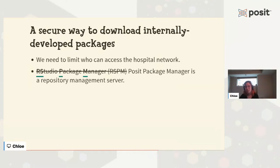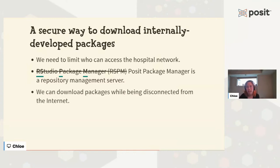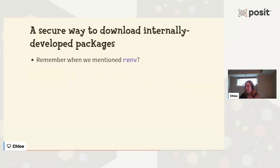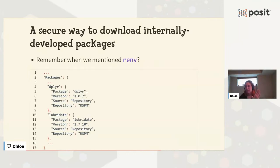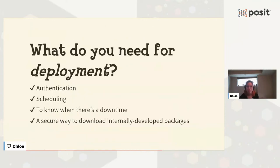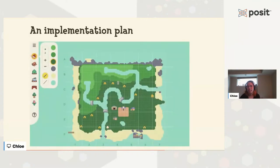Going back to renv: remember our renv.lock file specifies different packages and versions. It now also specifies how the package is being downloaded — instead of from GitHub or CRAN, we're downloading from RSPM, which stands for RStudio Package Manager, also known as Posit Package Manager. One more thing I want to add for deployment is an implementation plan. All the things discussed previously can apply to data science in general, but the implementation plan is more focused on the healthcare setting and deploying within the hospital.